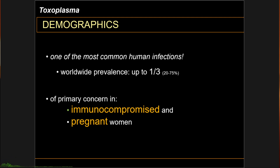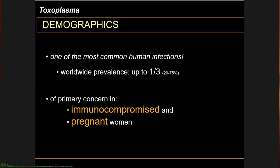Toxoplasmosis hotspots can also be traced socio-geographically. For instance, in France, toxoplasmosis is attributed to eating undercooked meat, while in Central America, it is attributed to the prevalence of stray cats. Generally speaking, Toxoplasma infections have higher rates in warm countries and low altitudes.